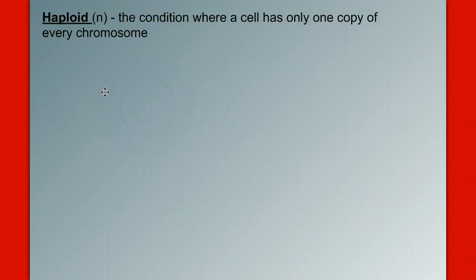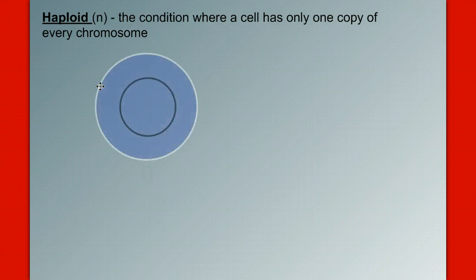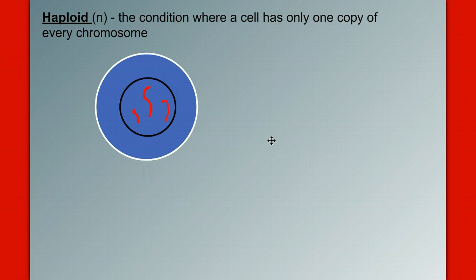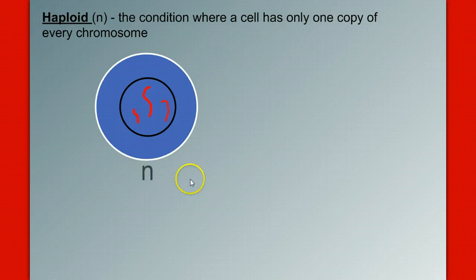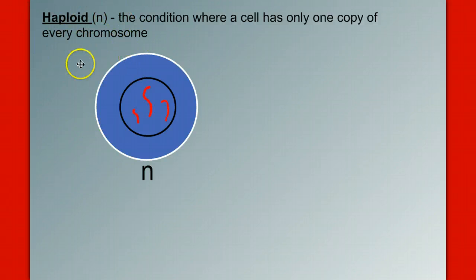Our first term is haploid — the condition where a cell has only one copy of every chromosome. So if we draw our cell and look inside, we have one long chromosome, one short chromosome, and one bent chromosome. We call this condition haploid. There's one of each type, and we give it the designation N. Haploid is a term we're going to use a lot: a cell is haploid when it has one of every chromosome.